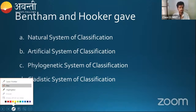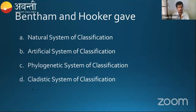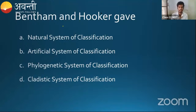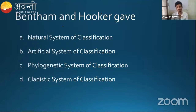Before we start solving questions, I'm asking a poll question: Bentham and Hooker gave which kind of classification — natural system, artificial system, phylogenetic system, or cladistic system? I'm launching the poll now. This is one of the most repeated questions, repeated almost four or five times within these two chapters. Only 50 percent of people have answered so far.